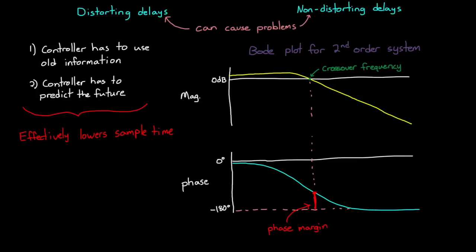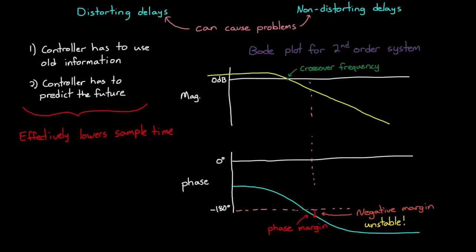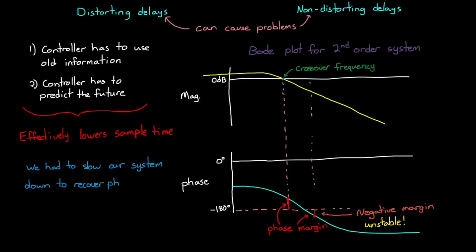However, if we add more delay into our system, either with transport delay or by delaying frequencies around the crossover frequency, then the phase plot will move down in some way. This erodes our phase margin. And if we add too much delay, this could cause negative margin and an unstable system. Now to counter that, we could lower the bandwidth of the controller by moving the crossover point to a lower frequency. This would get our phase margin back. But in doing so, we limited the speed of our system. We slowed it down and made it less responsive.